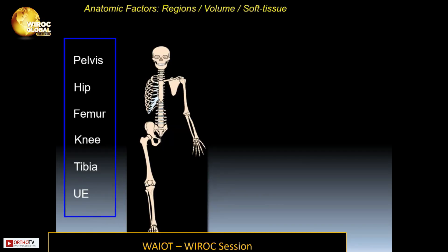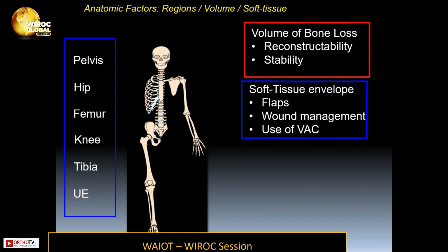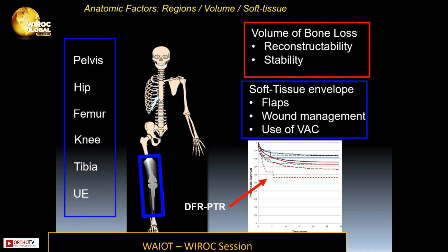Anatomic factors include the region, the volume, and the soft tissue loss. The volume of bone loss is important for reconstructability and stability. The soft tissue envelope may require flaps, wound management, and the use of VACs. Distal femoral and proximal tibia replacement combinations have the highest risk of failure.